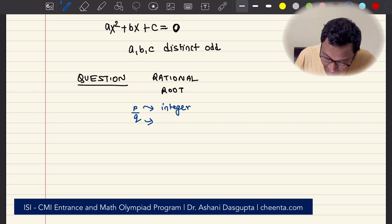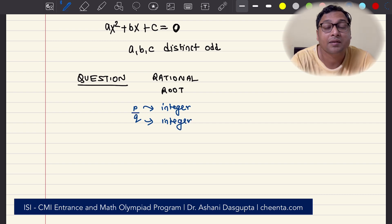If you plug in this number into this equation, will it ever be equal on both sides, equal to 0? If you replace x by some P over Q.